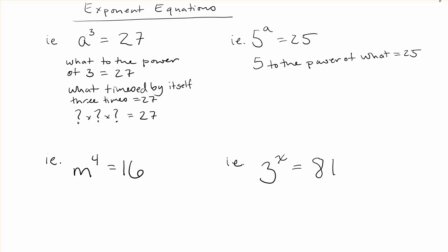Often in these problems you might use trial and error unless you have the basic facts memorized. Let's try: 2 × 2 × 2 = 8, that doesn't work. 3 × 3 = 9, × 3 = 27 — that does work. So my answer, which you have to make sure you write, is a = 3.